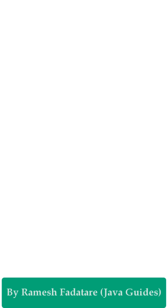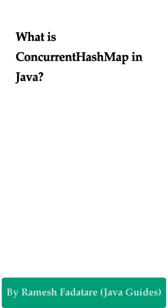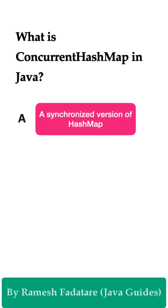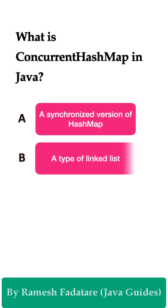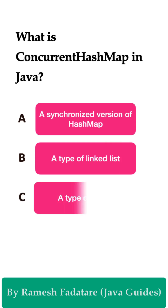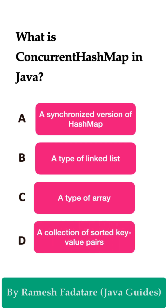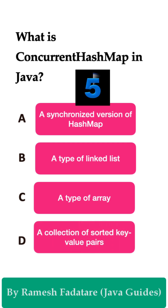Welcome to the Java Quiz Series. Here is one more question: What is ConcurrentHashMap in Java? Option A: a synchronized version of HashMap. Option B: a type of linked list. Option C: a type of array. Option D: a collection of sorted key-value pairs. You have five seconds to answer this question.